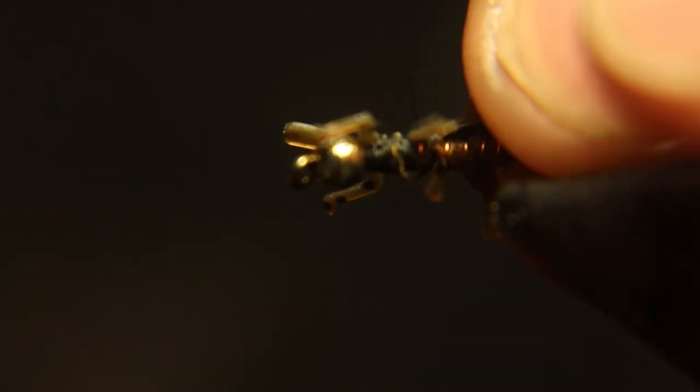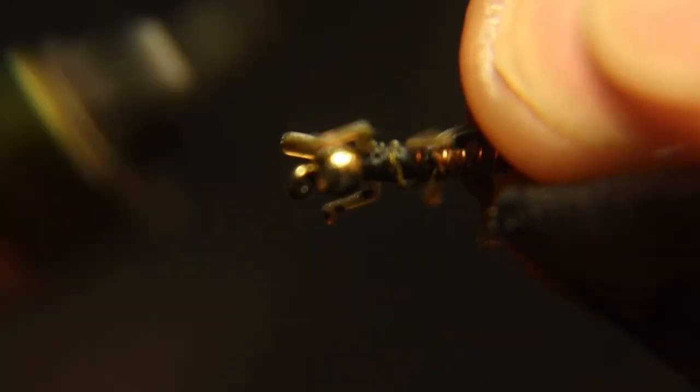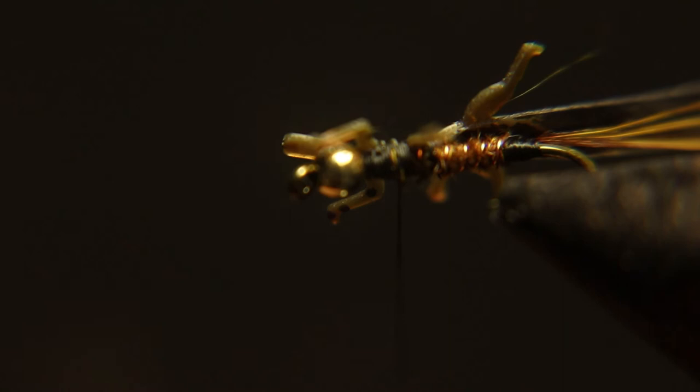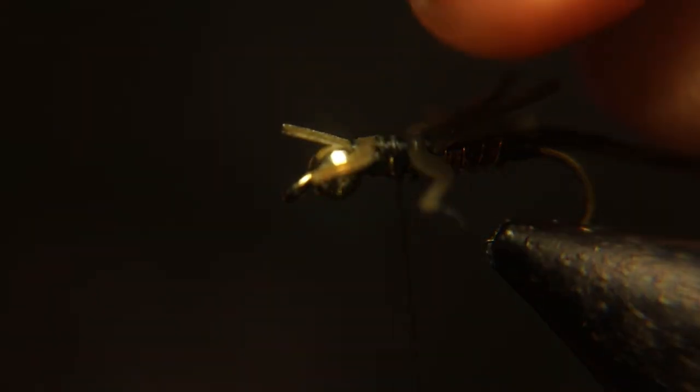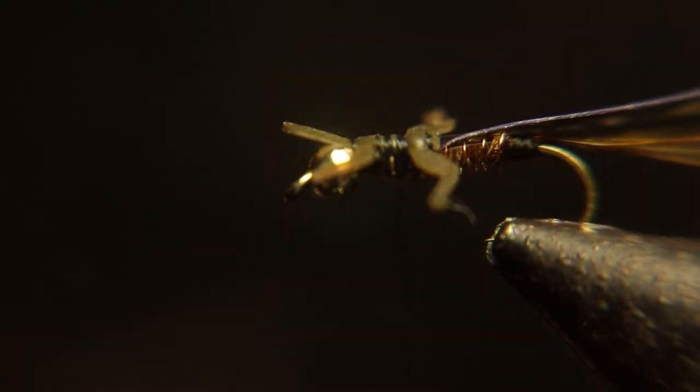Right behind the second set of legs, you're going to put a couple wraps. Then you're going to pull up on the tab close to the bead—there's a little rubber tab there—pull up on that and cut it off. Pull up on the back set of legs and the rubber there, and cut that off as close as you can to the second set of legs and tie them down.